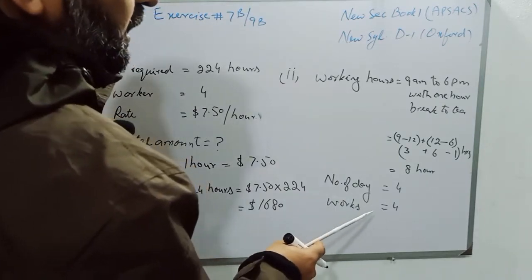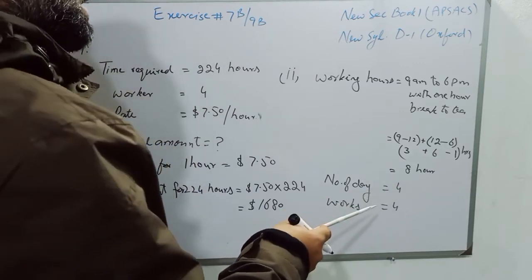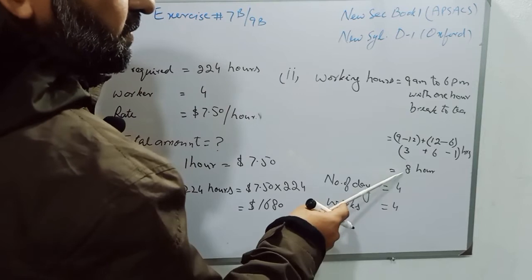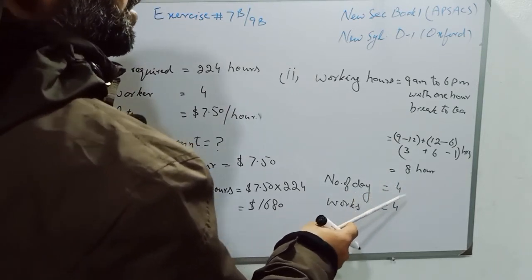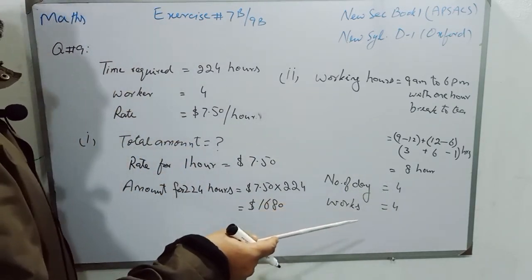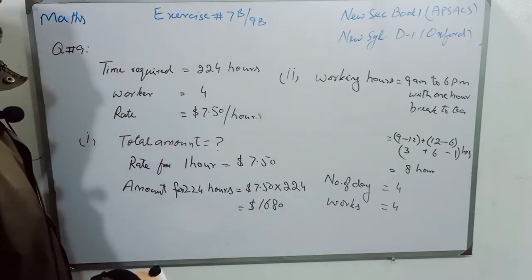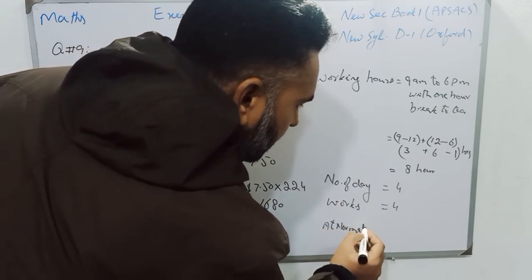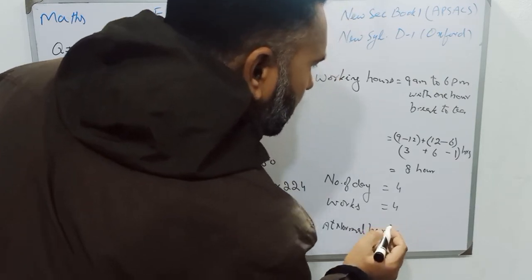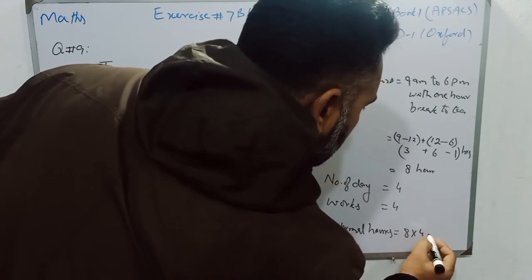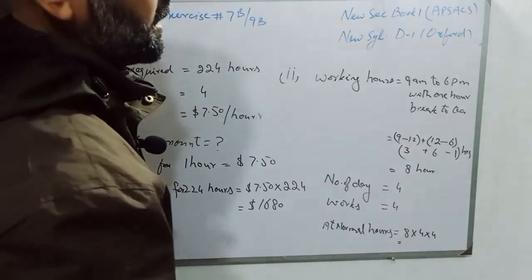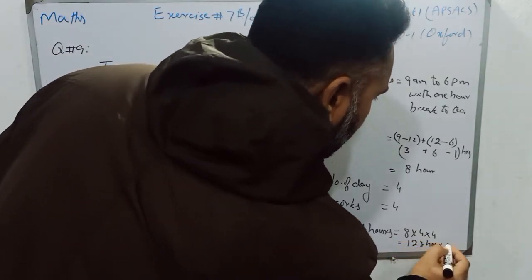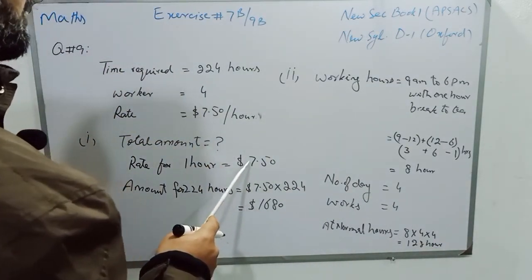A worker has to work 8 hours at normal rate, and the rest of the time will be paid at 1.5 times the normal rate. Total hours at normal rate: 8 working hours, 4 days, and 4 workers — so 4 × 4 × 8 = 128 hours are paid at normal rate. The rest of the hours will be paid at 1.5 times the normal rate.